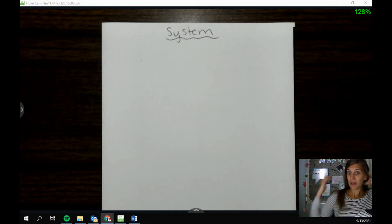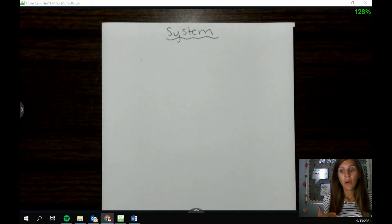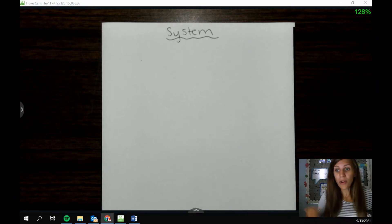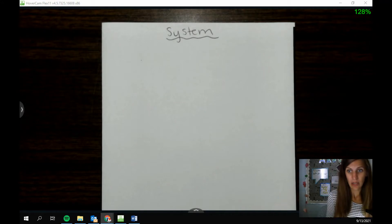So when we're talking about solving a system, what a system is is just multiple equations that help me to solve for multiple variables. So like last week, we were talking about just solving for x. When I solve for one variable, I just need one equation to do it. When I need to start solving for two variables, I need more equations. So if I want to solve for two variables, I need two equations.